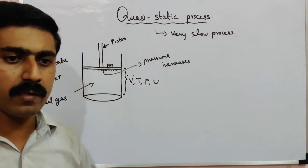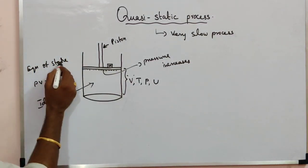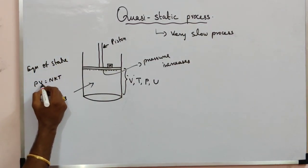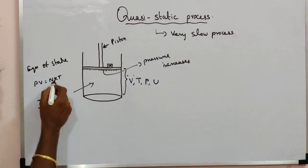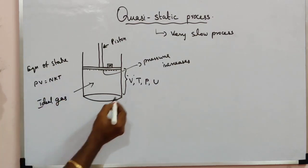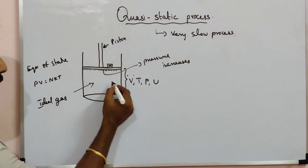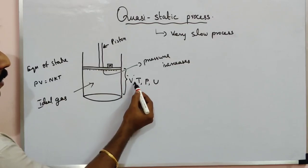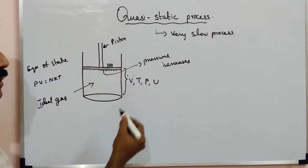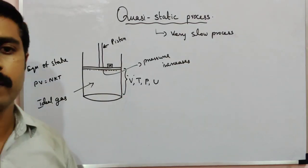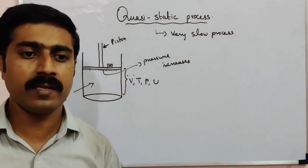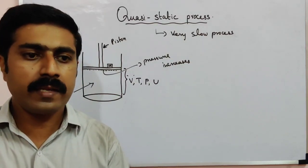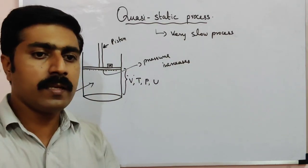When the block is suddenly placed, we cannot use the equation of state PV = NKT because the variables — volume, temperature, pressure, and internal energy — are all changing rapidly, and the system is not in thermal, mechanical, or chemical equilibrium.